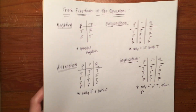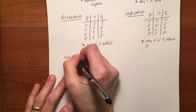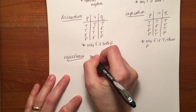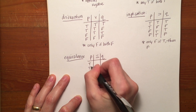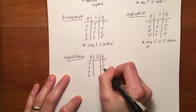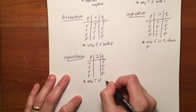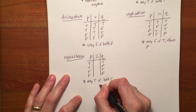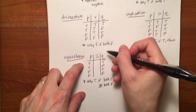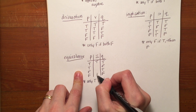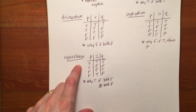The last operator to look at as far as a rule is concerned is equivalence — p triple bar q. Here the rule is it's only true if both are true or both are false; they have to be identical. So where they're both true, that's true; where they're both false, that's also true. The rest by process of elimination will be false. So you can see how each one of these operators has its rules that we use.